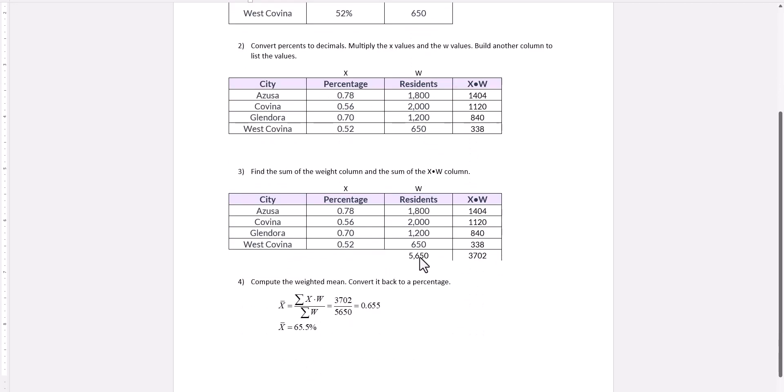The next step is we find the sum of the weights, which are the residents. That's 5,650.